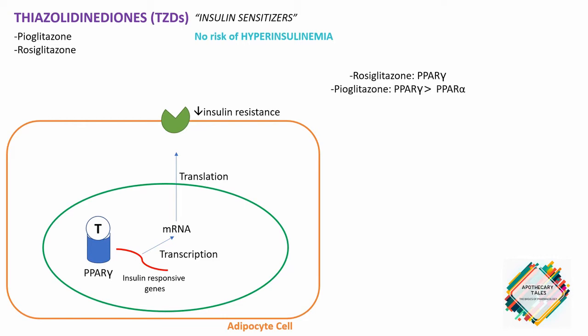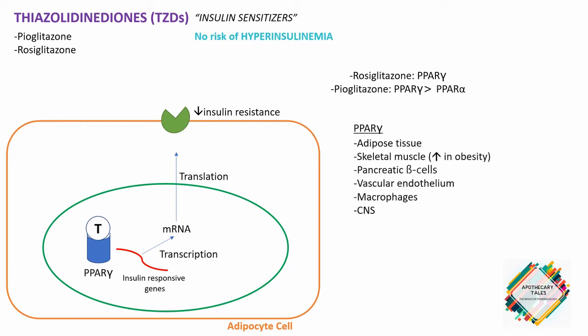PPAR-gamma is predominantly found in adipose tissue, skeletal muscle, pancreatic beta cells, vascular endothelium, macrophages, and CNS. Whereas PPAR-alpha is found in the liver, heart, skeletal muscle, and vascular wall.